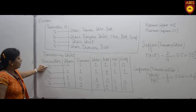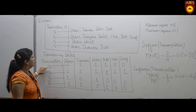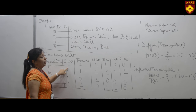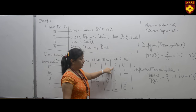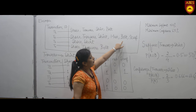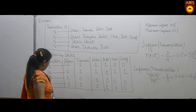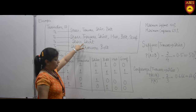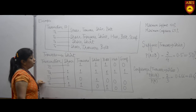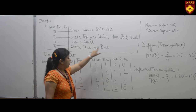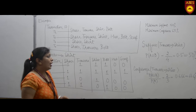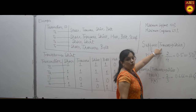We write down all transactions T1, T2, T3, and T4. In T1, shoes, trouser, shirt, and belt were purchased — written as 1, rest as 0. In T2, shoes, trouser, shirt, hat, belt, and scarf were purchased — all written as 1. In T3, only shoes and shirt were purchased — written as 1, rest as 0. In T4, shoes, trousers, and belt were purchased — written as 1, rest as 0.